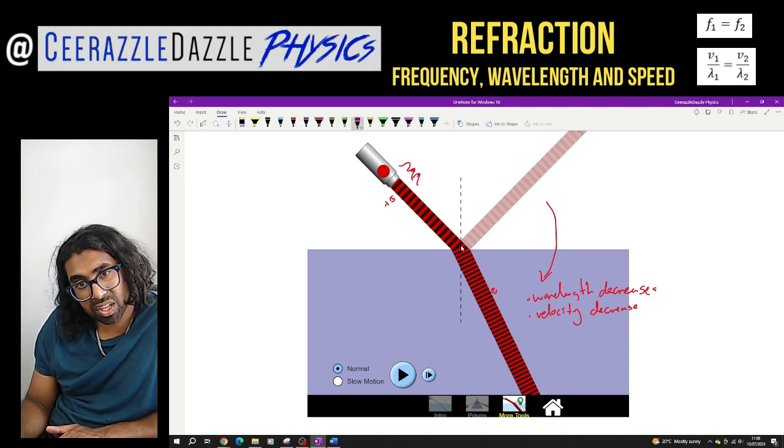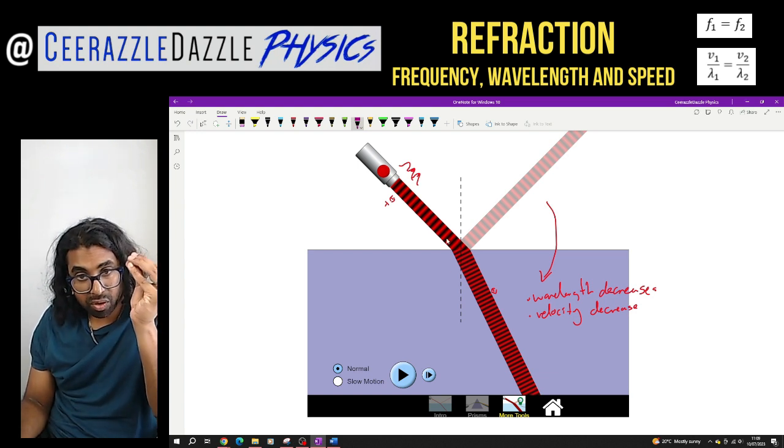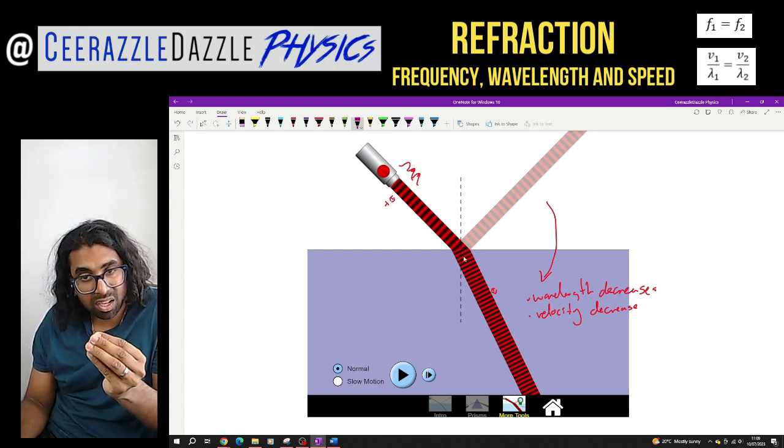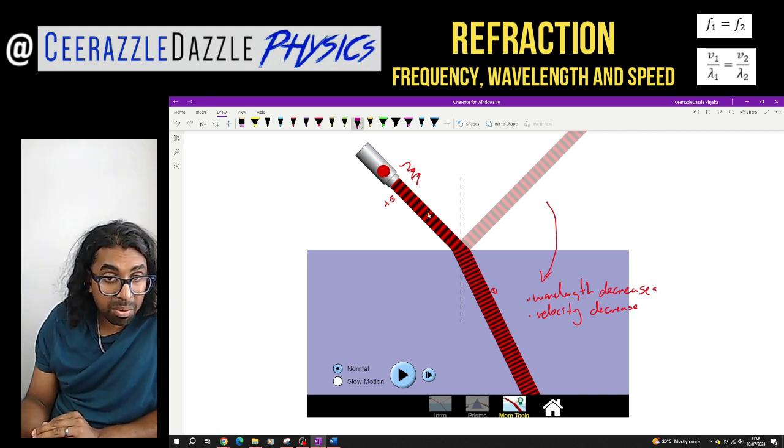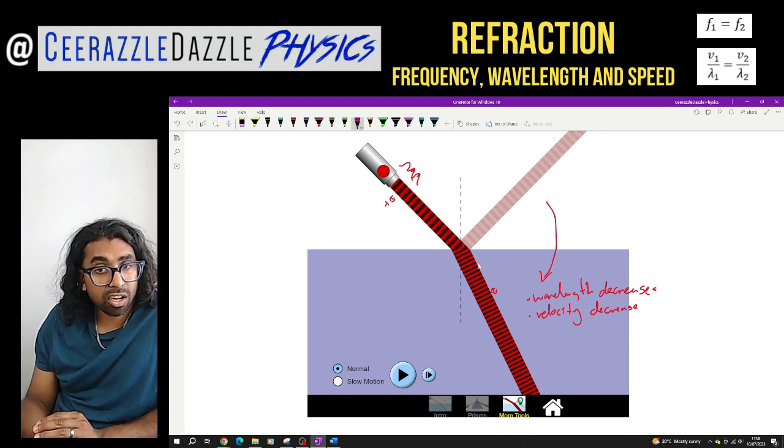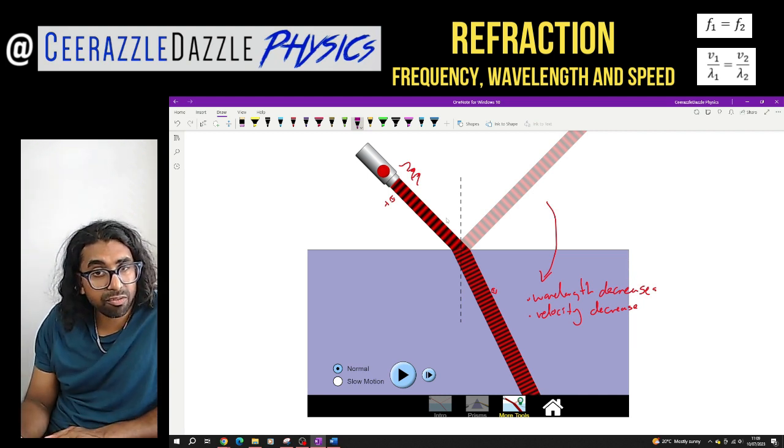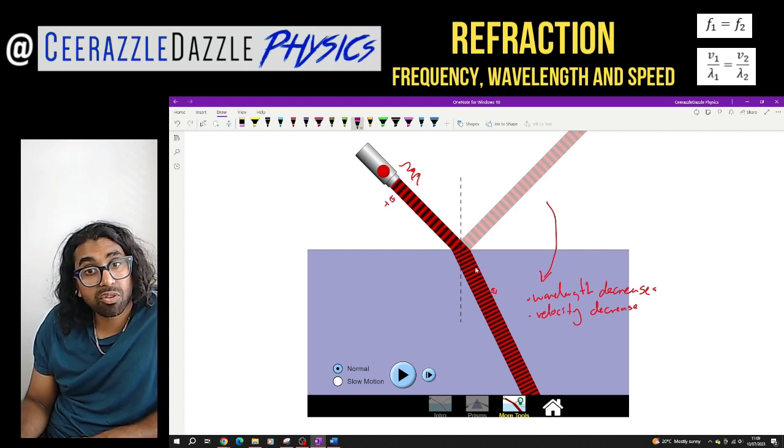I always try and explain it in terms of like a door. Imagine this is a door and it's the people walking in to a room over here. First of all, the number of people passing through the door going in will be equal to the number of people coming out over here per second. There'll be the same amount passing per second going in and out. They are closer together now compared to over here where they're further away. So what I'm really trying to explain is that the frequency remains the same.